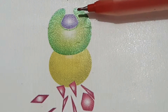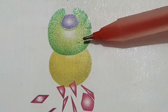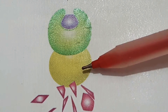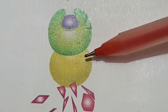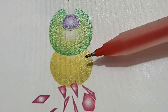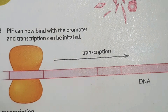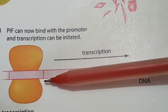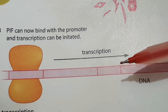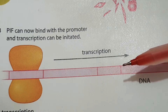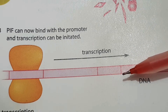Here you can see gibberellin and the gibberellin receptor in green, the DELLA protein, and the enzyme. Gibberellin bonds with the receptor and the enzyme, which initiates the destruction of the DELLA protein. Now you can see PIF — transcription and DNA — PIF can now bind with the promoter and transcription can be initiated.